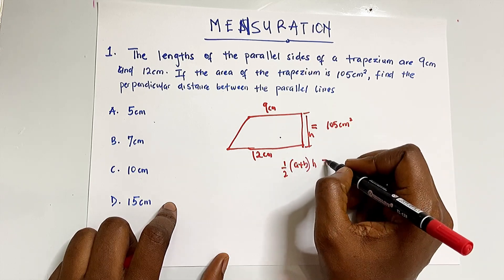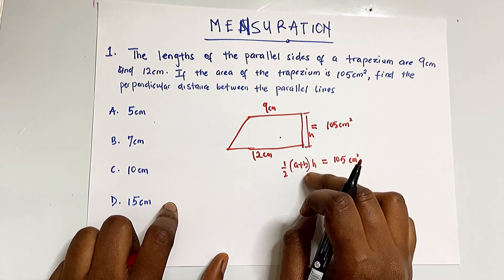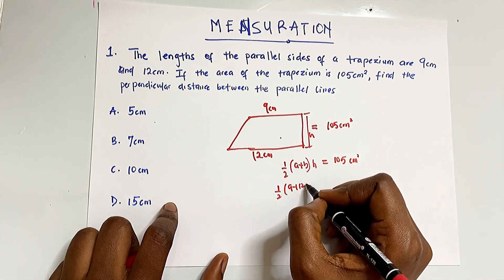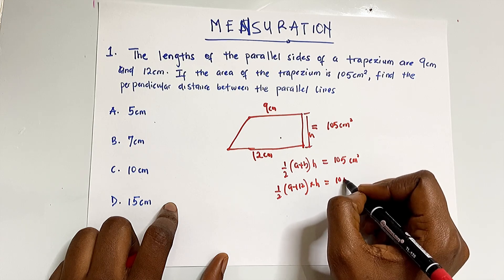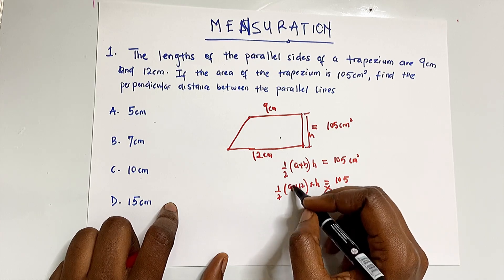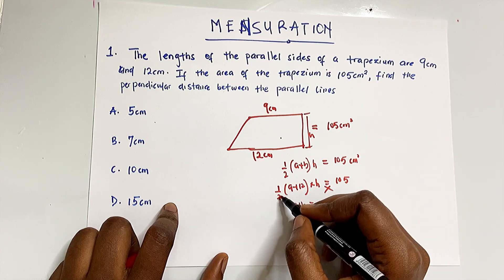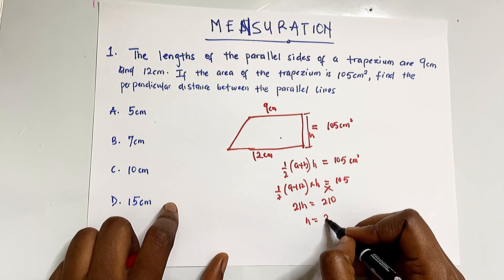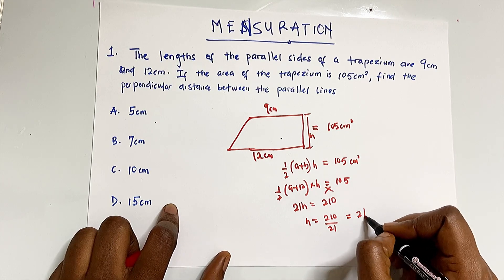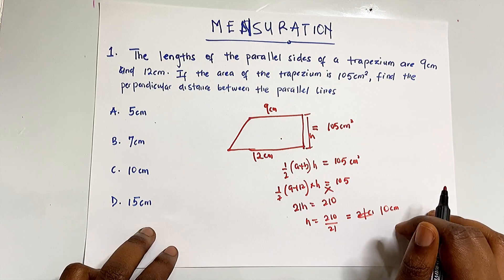We equate our known values: 1/2 × (9 + 12) × h = 105. Cross-multiplying gives 21h = 210. Dividing both sides by 21, h = 210 ÷ 21 = 10 centimeters. So the perpendicular distance between the parallel lines is 10 centimeters, which is option C.